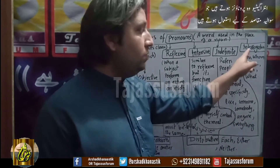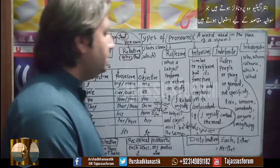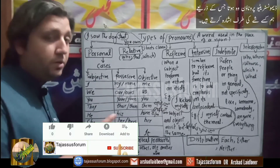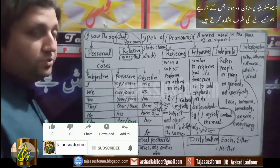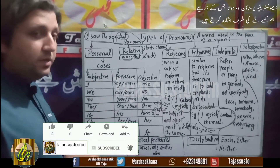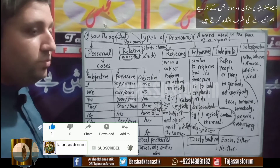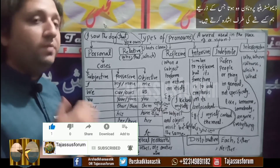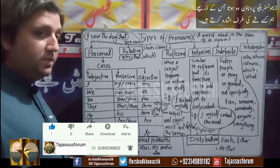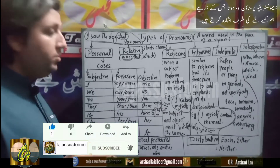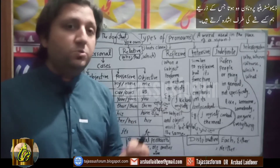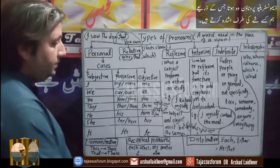The other type of pronoun is demonstrative pronoun. Demonstrative pronouns are used to point out something. These pronouns are four in number — basically two, but the remaining two are the plurals of the first two. For example, the plural of 'this' is 'these', and the plural of 'that' is 'those'. So there are only four pronouns used as demonstrative pronouns.